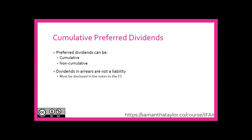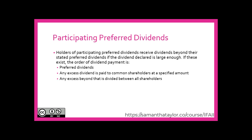Preferred shares may be participating, meaning holders of participating preferred shares may receive dividends beyond their stated preferred dividend if the declared dividend is large enough and if this feature existed upon share issuance. If these exist, the order of dividend payment would be: first, preferred dividends; then any excess is paid to common shareholders at a specified amount; and any excess beyond that is divided between all shareholders.